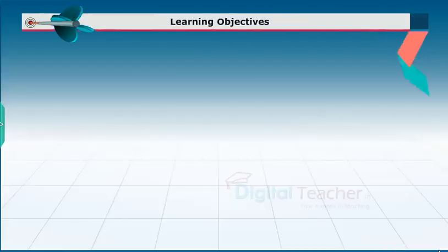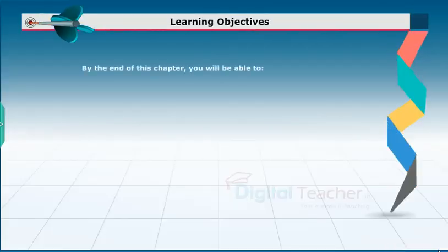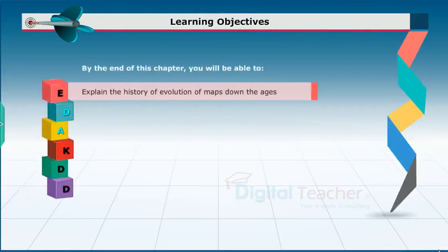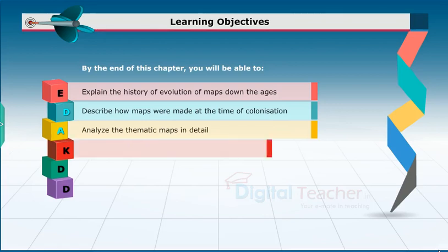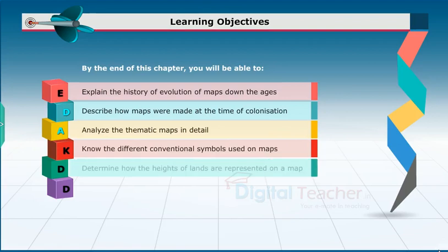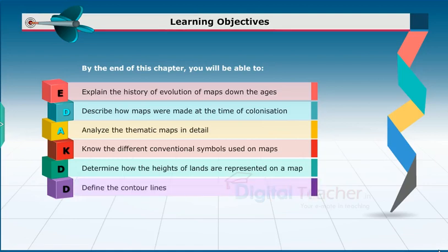Learning Objectives. By the end of this chapter, you will be able to: explain the history of evolution of maps down the ages; describe how maps were made at the time of colonization; analyze the thematic maps in detail; know the different conventional symbols used on maps; determine how the heights of lands are represented on a map; and define the contour lines.